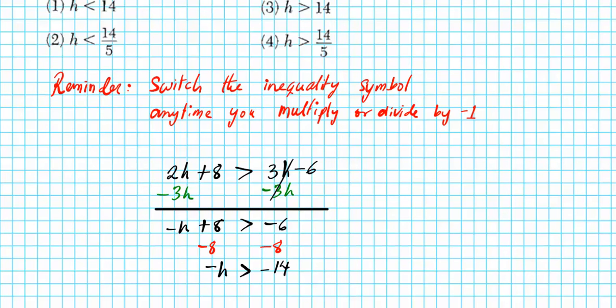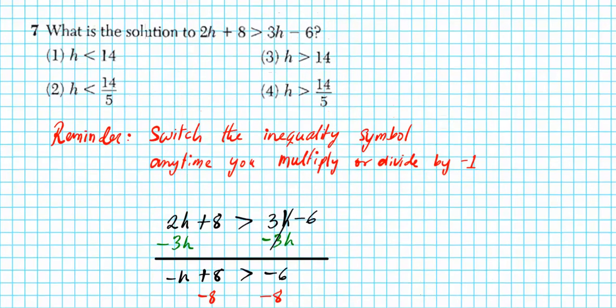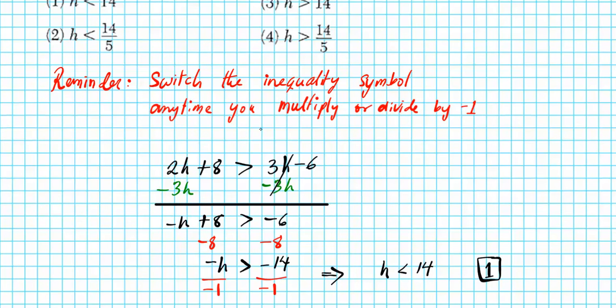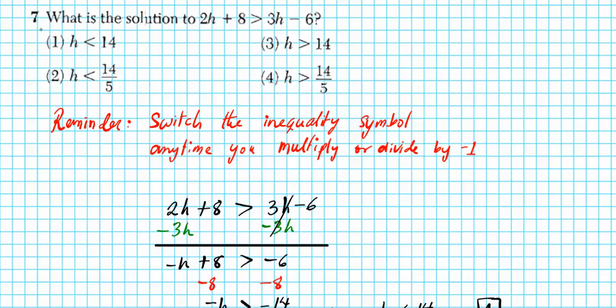Now we want H isolated, so we're going to divide or multiply both sides by negative 1. We will accomplish the same goal. If we carry out that procedure, what do we get? H is less than 14. What just happened? Whenever you divide by negative 1, as indicated in the reminder, you want to switch the orientation of your inequality symbol. That's why we have H as less than 14. The answer to number 7 is option number 1. So there goes our final result.